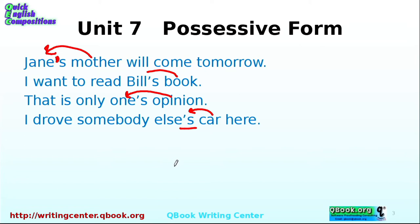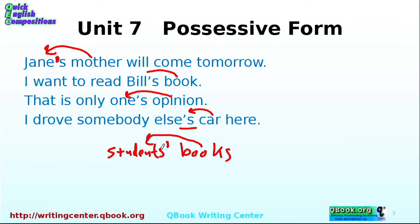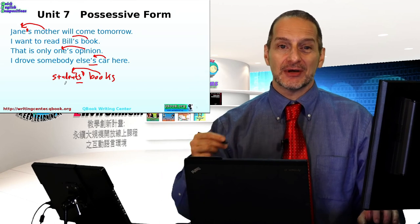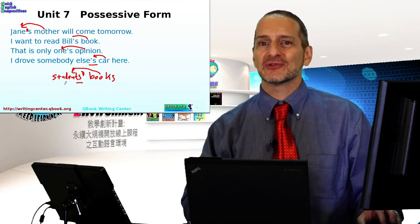The only exception to these cases is where you have multiple people. For example, 'The books belong to the students.' We could change that around and say 'These are the students' books.' So the books belong to the students. Because 'students' is plural, you put the apostrophe after the S. Sometimes that can get a little confusing, but try your best. When it's just one person, it's easy. When it's multiple people, put it after the S.